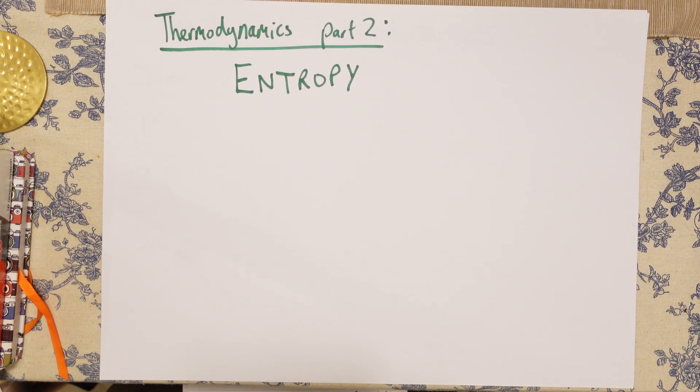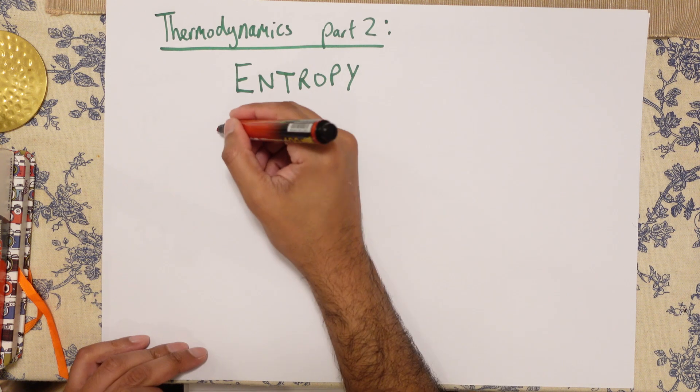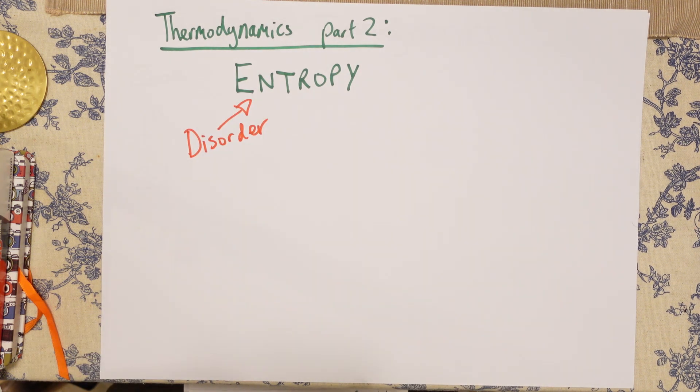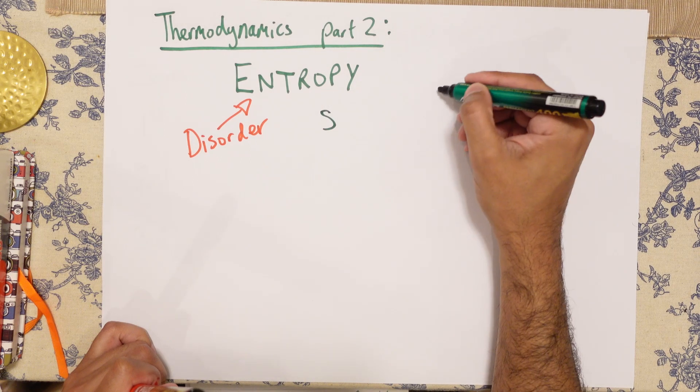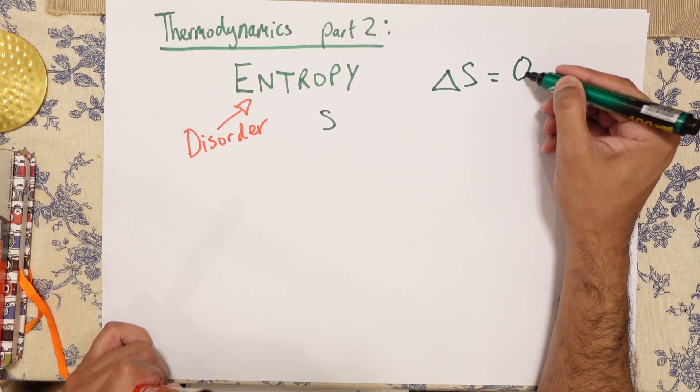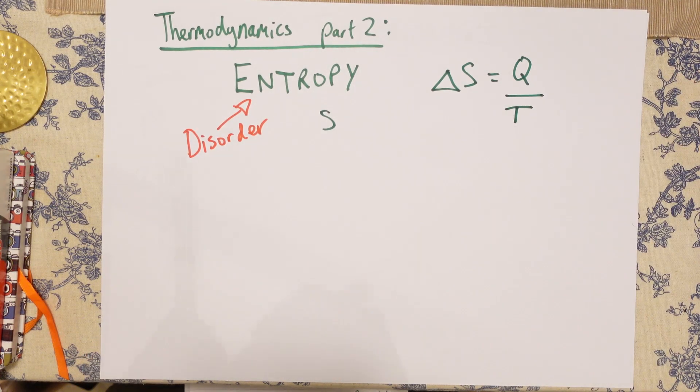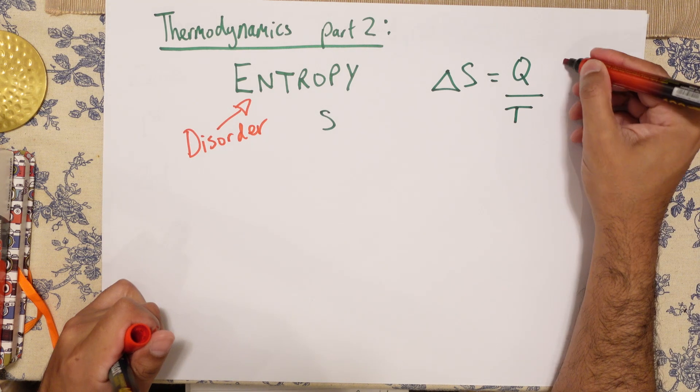Hi guys, welcome to Science Chomp. Today we're looking at thermodynamics part 2, and we're going to be looking directly at entropy. Now entropy, if you don't know, is disorder and it's represented by the letter S. We can say delta S, so the change in entropy is Q, which is heat, divided by T, which is temperature.